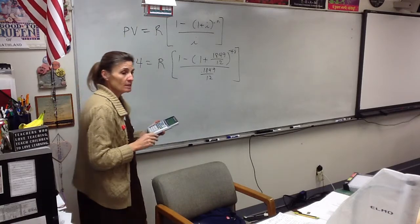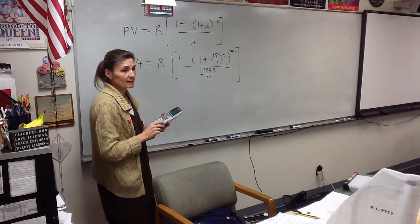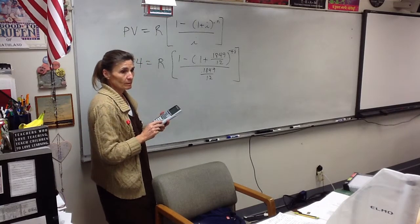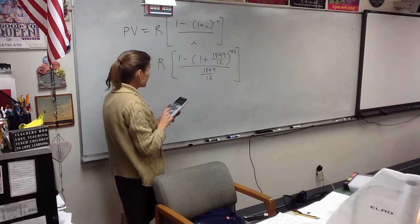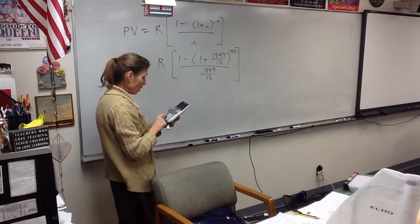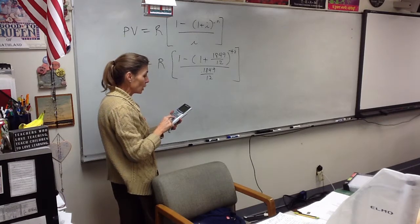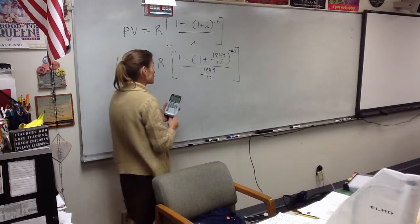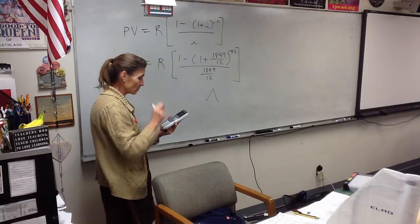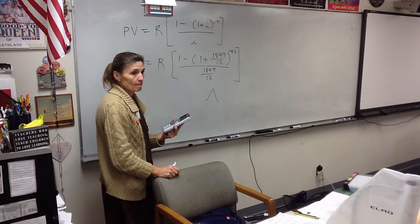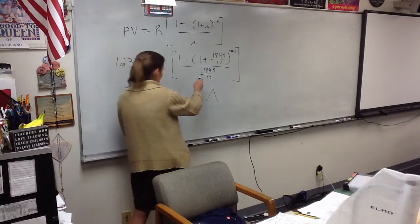Get your calculator out. Type exactly what I tell you to type. You ready? Okay. Start right here. So, I'm going to type 1 minus, parentheses, 1 plus 0.1849 divided by 12. Close the parentheses. Raised to negative 48. Equals. And you didn't type exactly what I told you to type. 0.51. Yep.